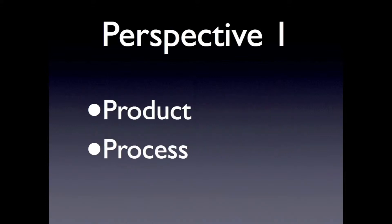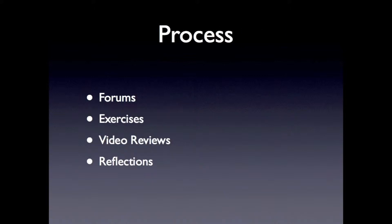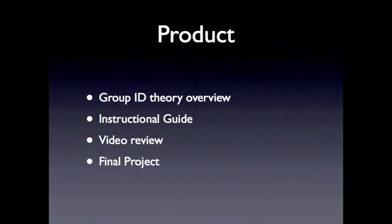The first way to see the course is to look at it as a binary product and process. With process the emphasis is on doing things and learning while you're doing. With product the emphasis is on delivering some final piece, item, or deliverable at the very end.